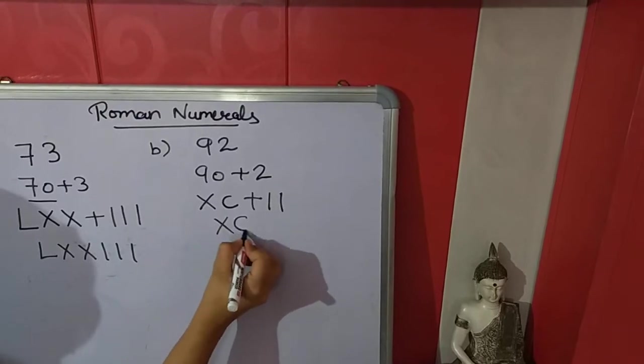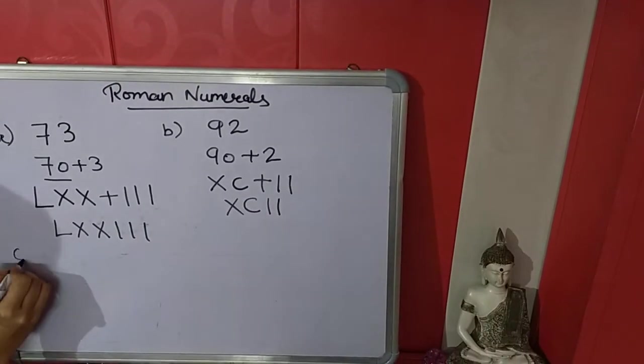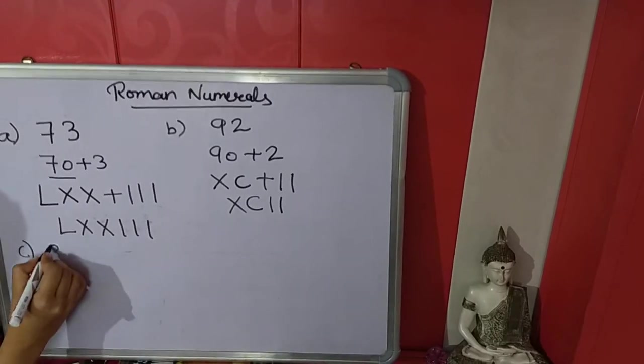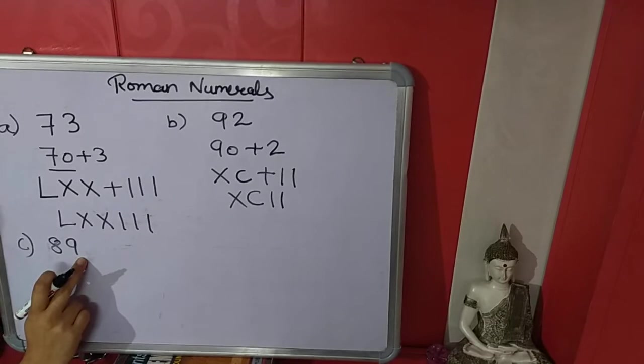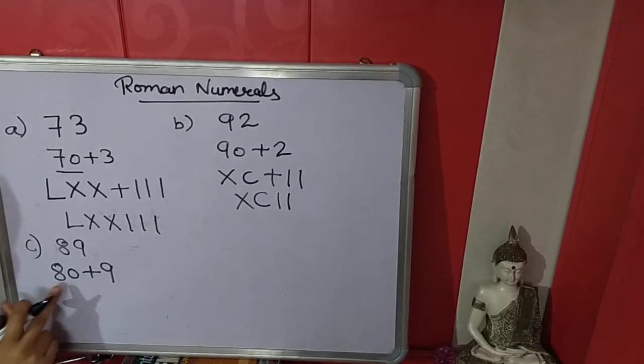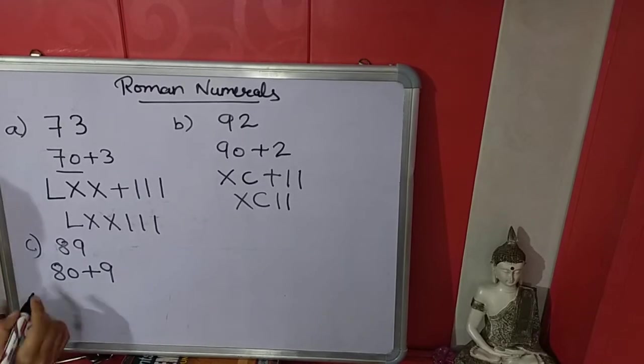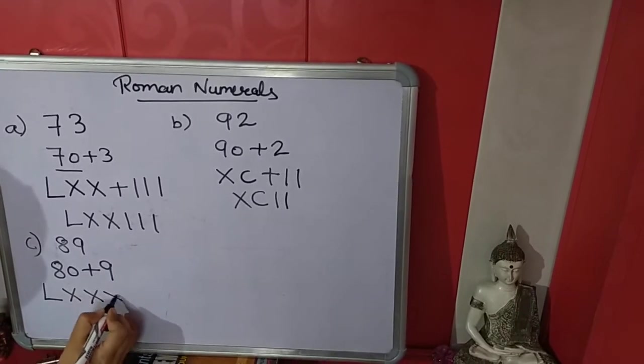Now we will write together, that is 92, XCII. Take another example, 89. We will expand this 89, it will be 80 plus 9. Roman number of 80, 50, 60, 70, 80, that is LXXX.